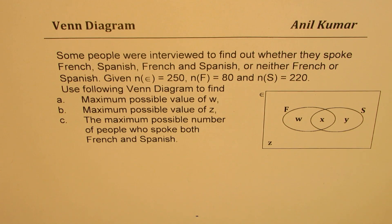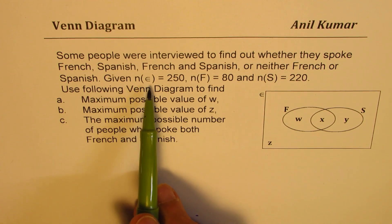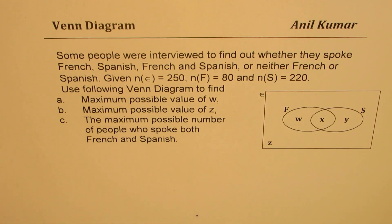The question here is: some people were interviewed to find out whether they spoke French, Spanish, French and Spanish, or neither French nor Spanish. Given N(E) equals 250, N(F) equals 80, and N(S) equals 220.